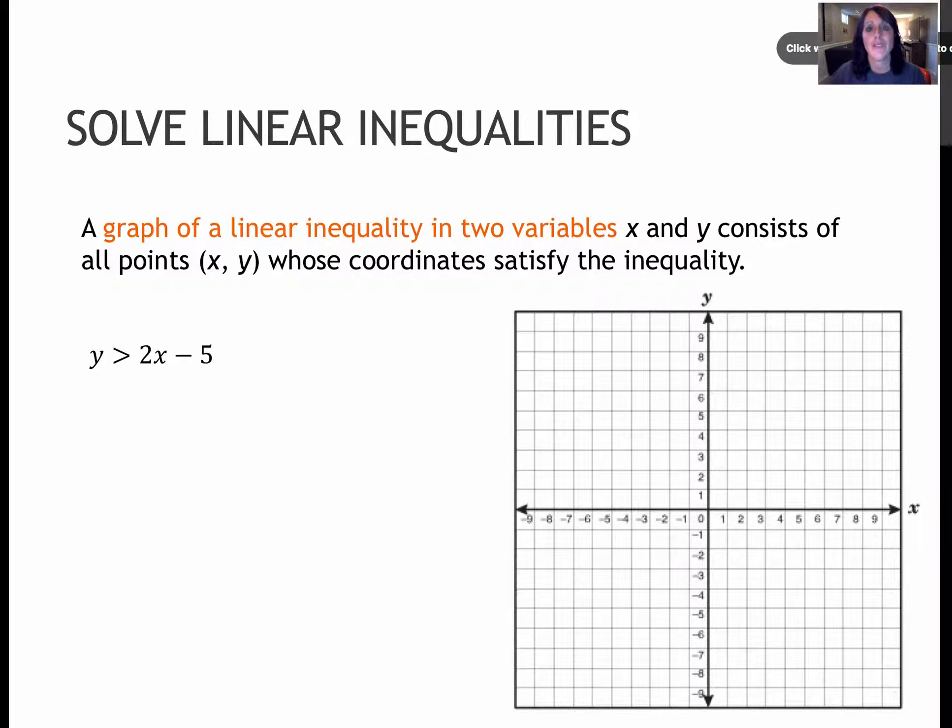So when we are graphing a linear inequality, the solution is all of the points that would satisfy the inequality. Obviously because it's an inequality, there's not just one solution. So when we graph these, we would start by graphing what the equation would look like normally.